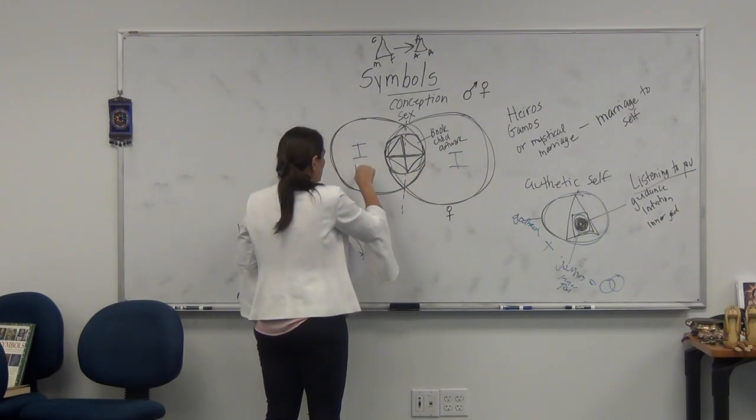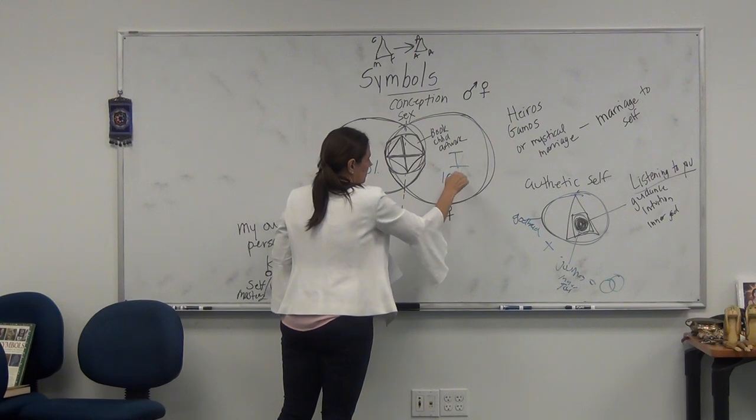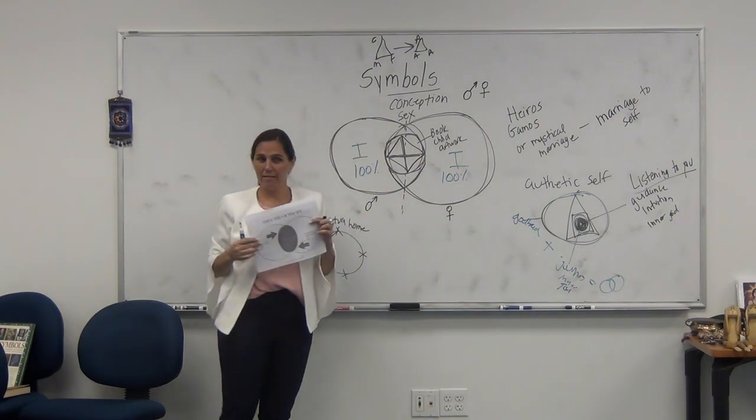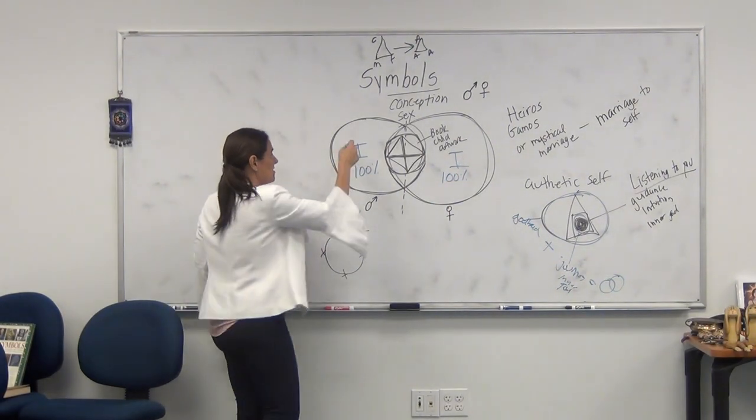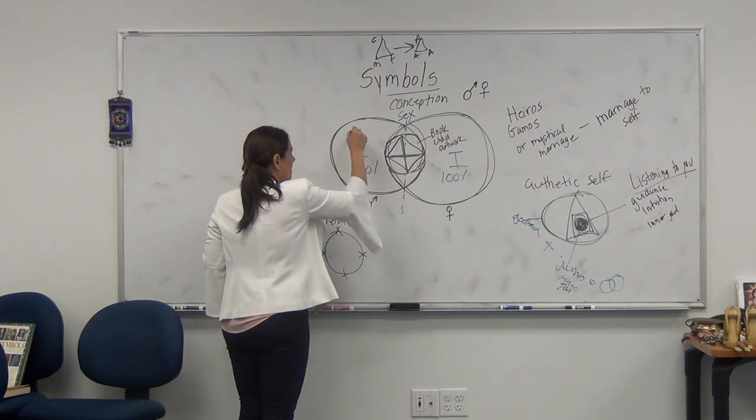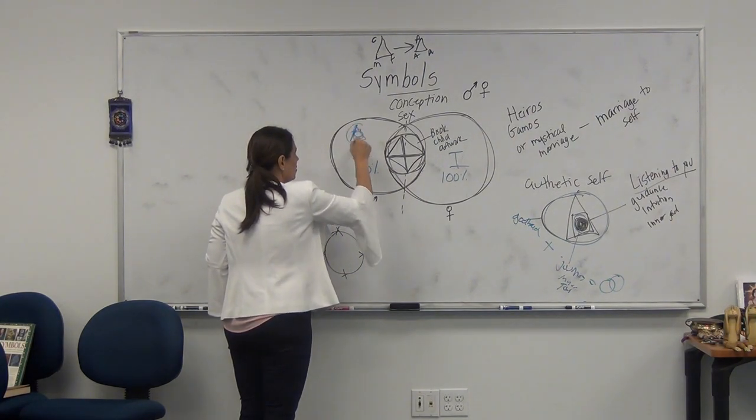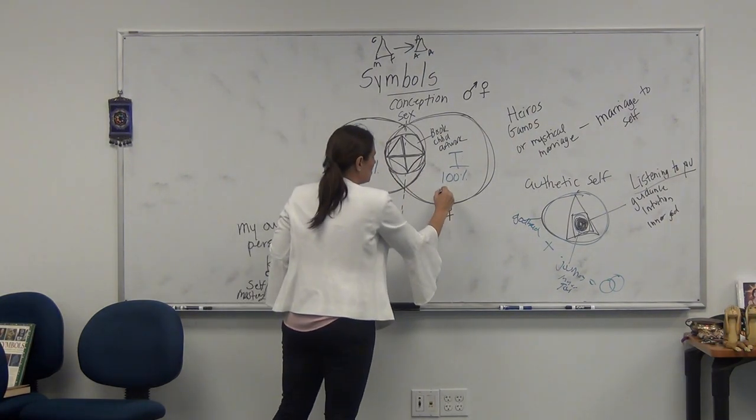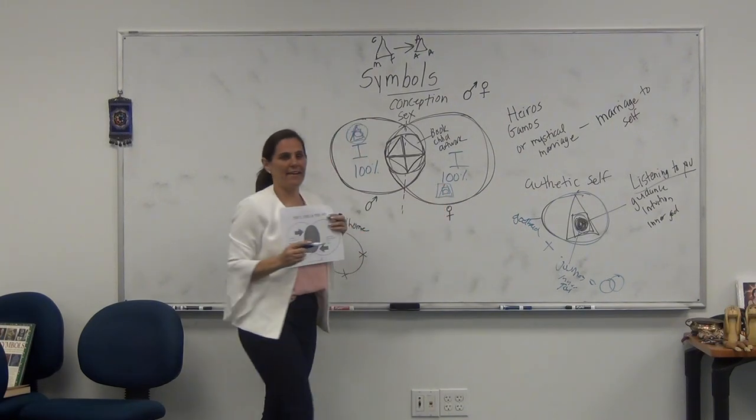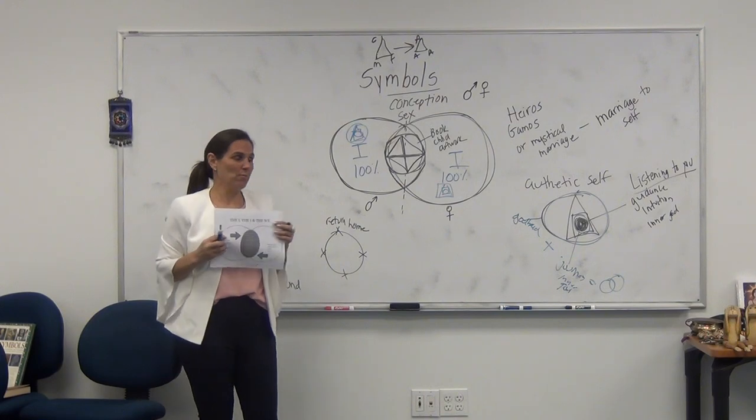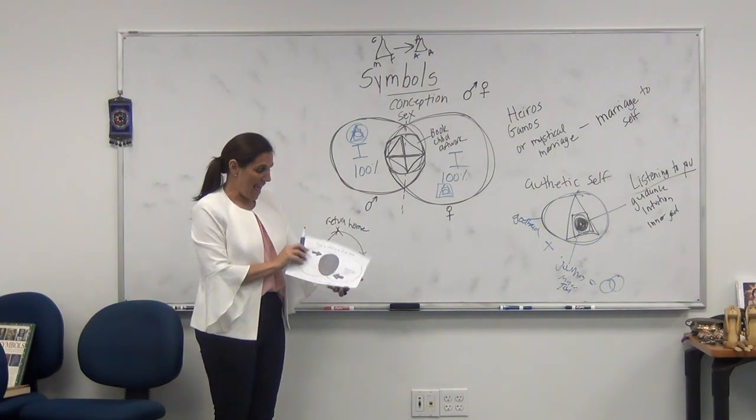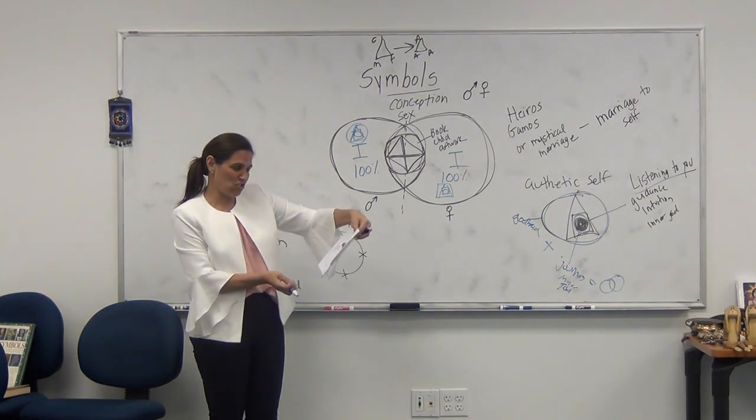Each part is an I. One hundred percent. Okay? This person has done their work. They've squared the circle. This person has done their work. They've squared the circle. And now they're both full. They're both one hundred. And so, relationship is the we.